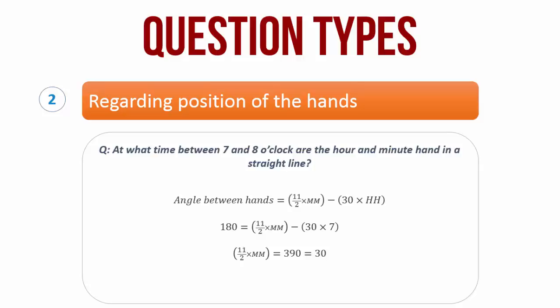This gives us 11 by 2 into minutes is equal to 390. Now 390 is 30 more than 360. Now an angle measuring 360 degrees plus x equals an angle measuring x. So we replace 390 with 30 in the formula. Solving for the minute value, we get minute equal to 5 5 by 11 of a minute.